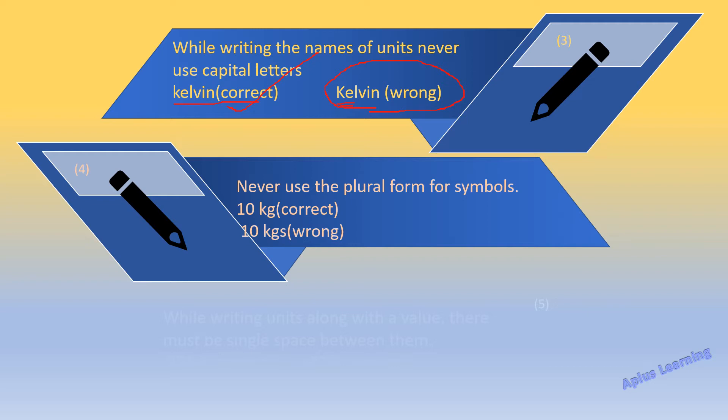The next rule: never use the plural form for symbols. Children, whatever the numbers are — 10, 100, 200 — the symbols are always written in the singular form. So it is '10 kg', '100 kg', '200 kg'. Never write '10 kgs' — that is not the correct way of representing it.